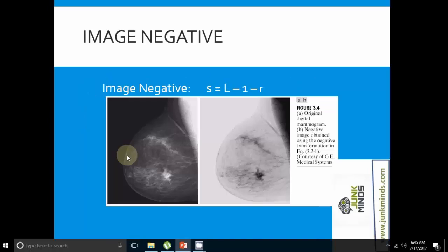Under point processing, we have image negatives. There are two different images here: the original digital mammogram and the negative image obtained using the negative transformation. For an image with gray levels in the range 0 to L-1, negative transformation is represented as S = L-1-R.